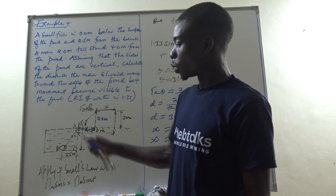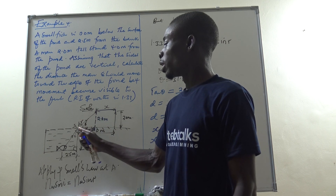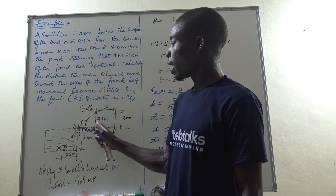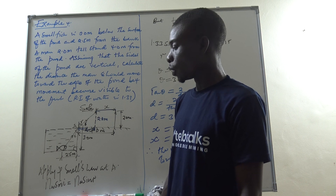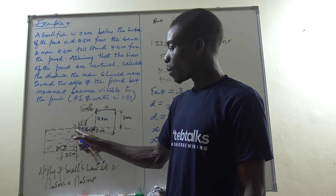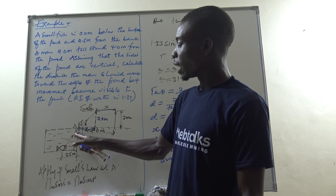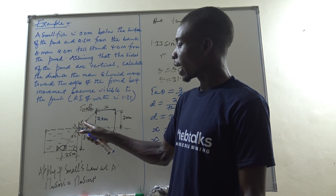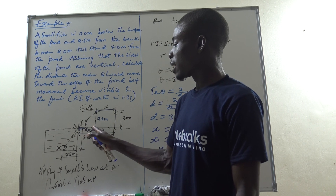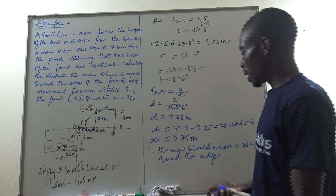To summarize the approach: we analyzed the man moving to a critical boundary point where the fish can just barely see him. At that position, we drew the ray diagram showing refraction at the water surface. We used the fish's depth and horizontal distance to get angle i via tangent, then applied Snell's Law to get angle r = 58.4°, and from that computed theta = 31.6°. Using the man's height of 2.0 meters and tan(theta), we found d = 3.25 meters, and then x = 4.0 − d = 0.75 meters.